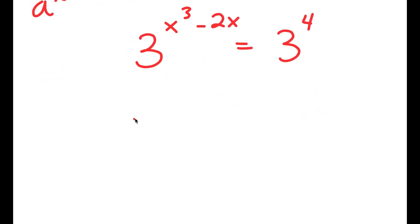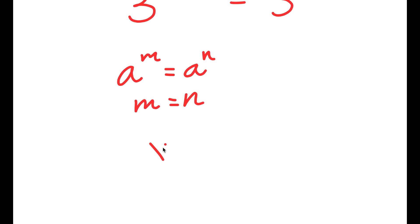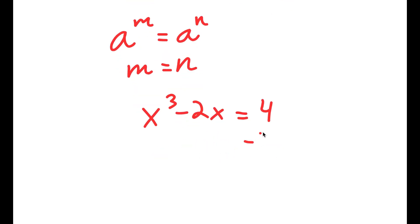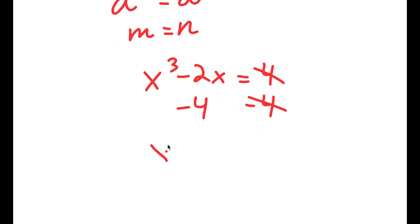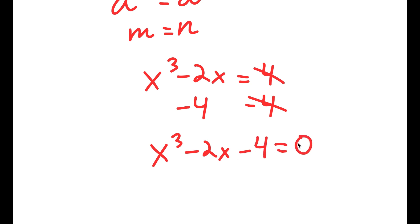Now, if I have something in the form a to the power of m is equal to a to the power of n, this means that m is equal to n. So x to the power of 3 minus 2x is equal to 4. And if I subtract 4 on both sides, I get x to the power of 3 minus 2x minus 4 is equal to 0.